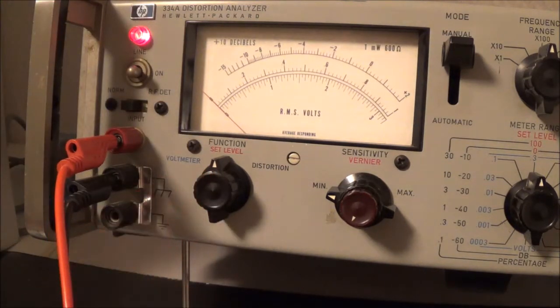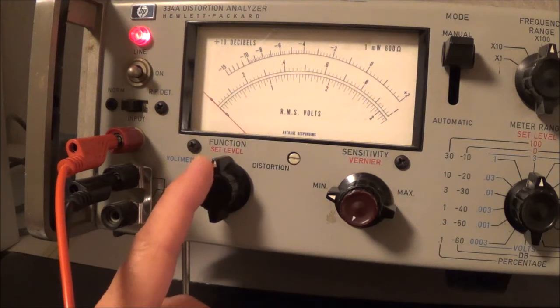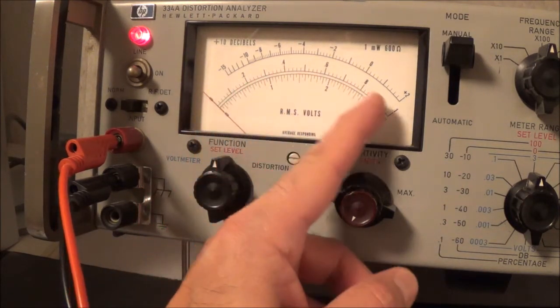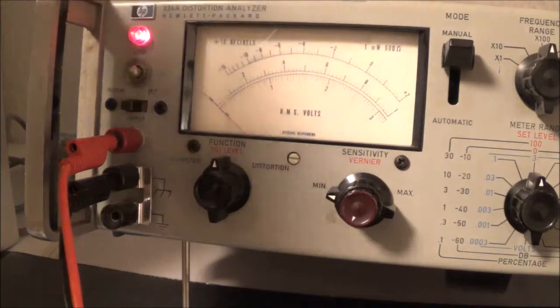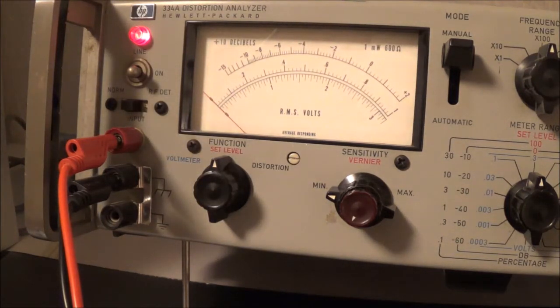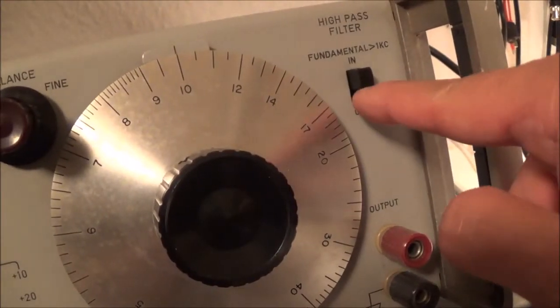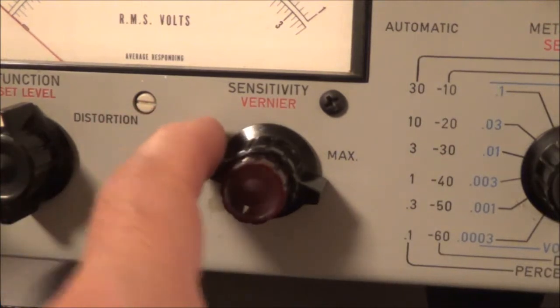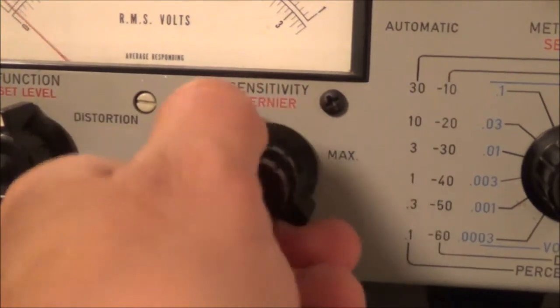And your function switch is to the set level. Set level means basically now we're just setting this thing up. What we're going to do is try to get a full scale reading here. And the mode switch has got to be set to manual. And if your fundamental frequency is one kilohertz or higher, we have to set this filter here to in.